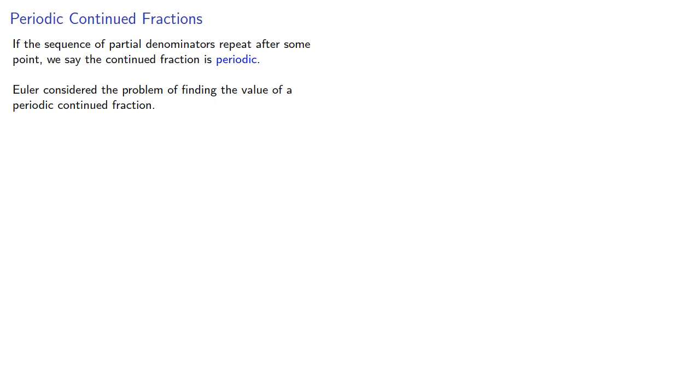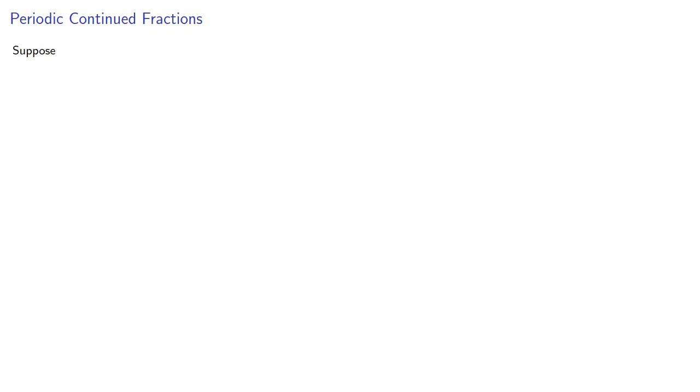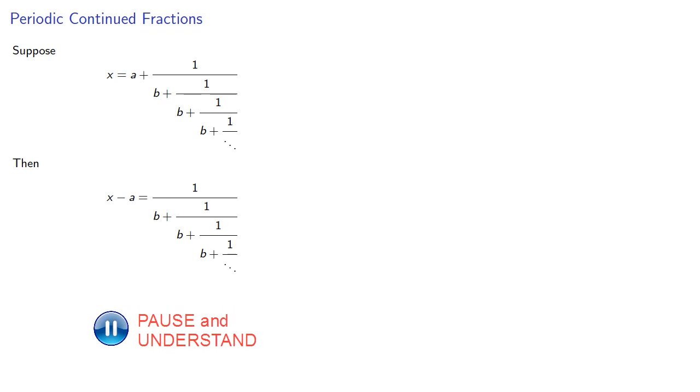Again, it helps to introduce some modern terms. If the sequence of partial denominators repeat after some point, we say the continued fraction is periodic. Euler considered the problem of finding the value of a periodic continued fraction. Let's consider the simplest case where our partial denominators are all the same, except for that first denominator, which again isn't really a denominator. So we find x minus a equals...